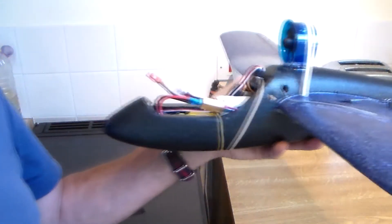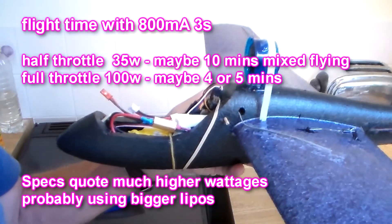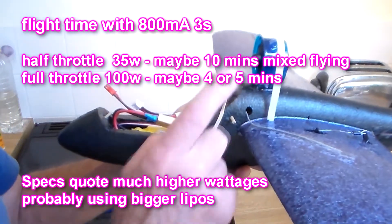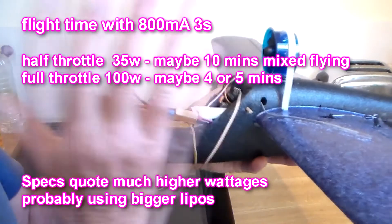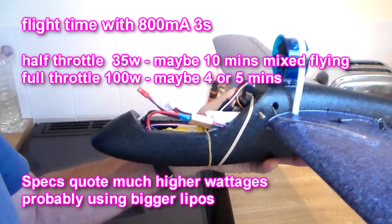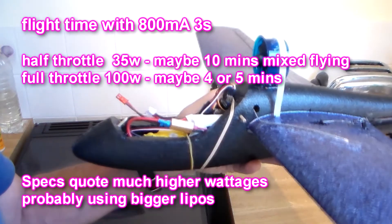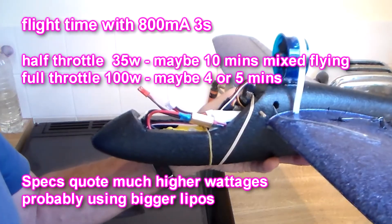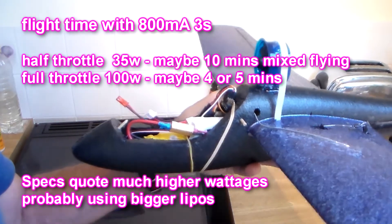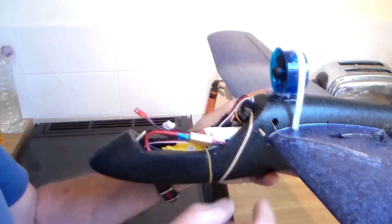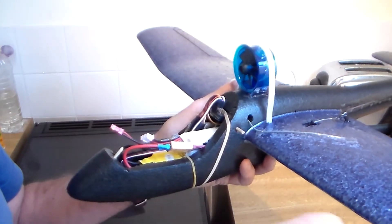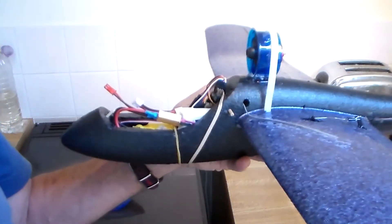I did a watt test with the EDF and the 850 milliamp battery. Came out to about 100 watts flat out or 35 watts half throttle, which equates to about 5 minutes flying if you're lucky. Full throttle. But it does equate to 130 watts a pound, which is massive, three times as much as you need. Or probably 8 and a half or 10 minutes mix flying at half throttle, which is not bad at all.